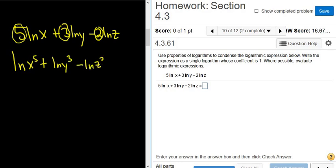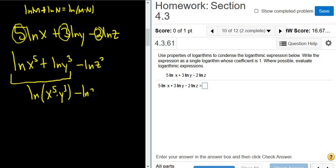Now we can apply the properties. So this piece here, we're going to use the product rule for that piece. Remember the product rule is if you have ln(m) plus ln(n), that's ln(m times n). The multiplication turns into addition. So this is ln(x to the 5th times y cubed) minus ln(z squared).